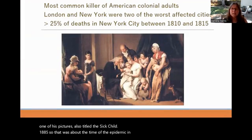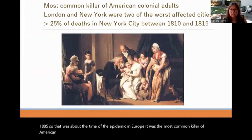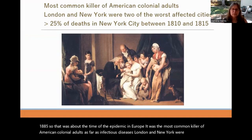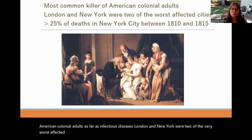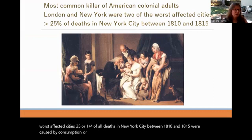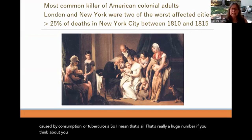Tuberculosis was the most common killer of American colonial adults among infectious diseases. London and New York were two of the worst affected cities. Twenty-five percent — one quarter — of all deaths in New York City between 1810 and 1815 were caused by consumption or tuberculosis. That's a huge number: one in four people you know dying.